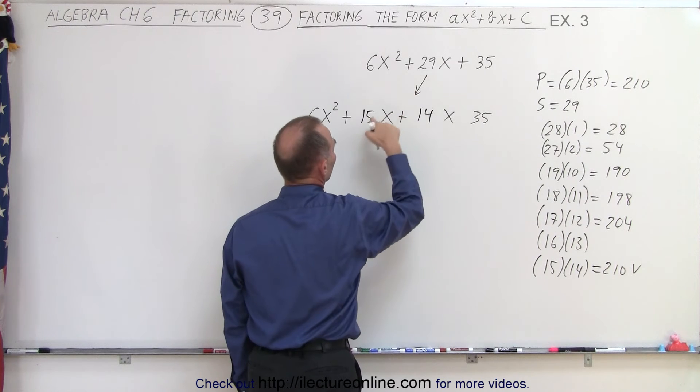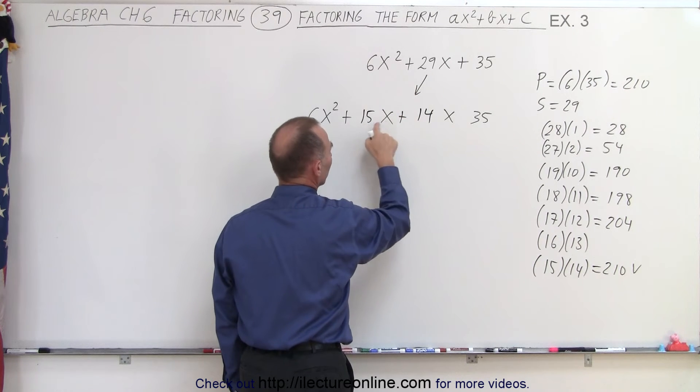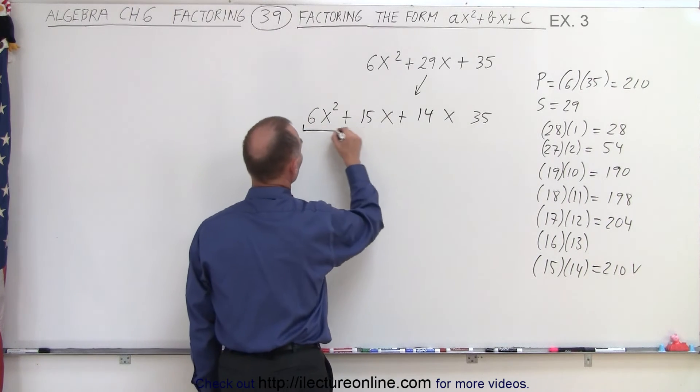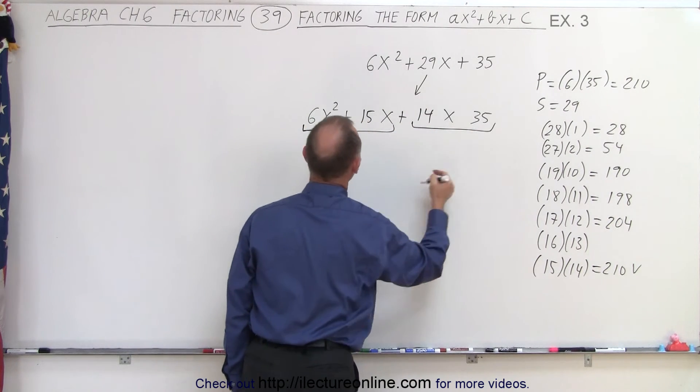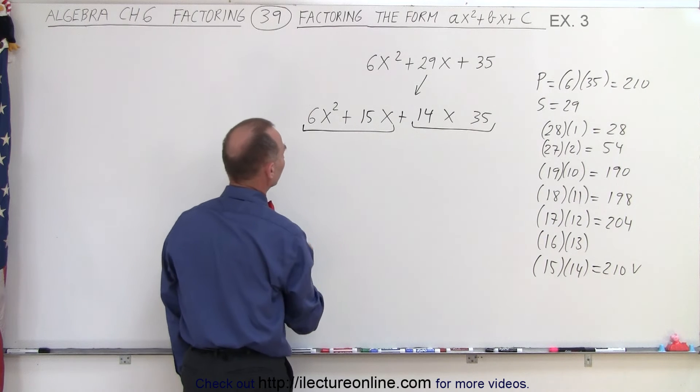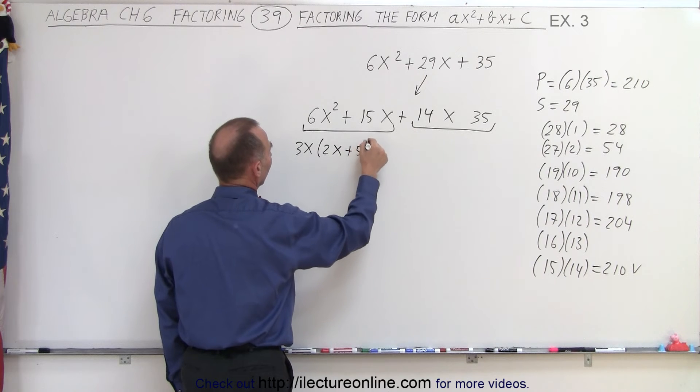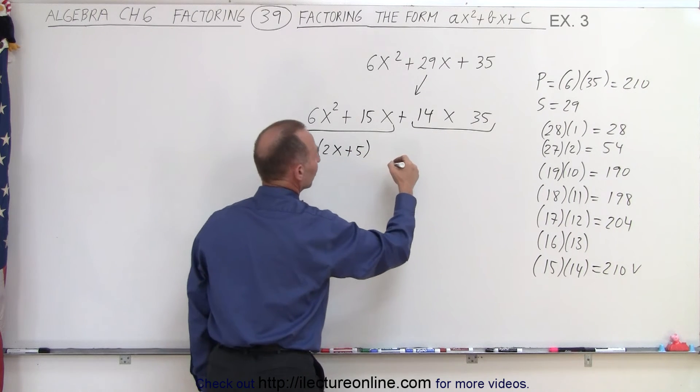I've written the middle term as the sum of two middle terms, and the numerical coefficients were found using this technique. Now I group the first two and the last two terms together and factor out what's common. Here I can factor out 3X, leaving 2X plus 5.